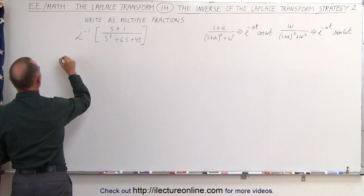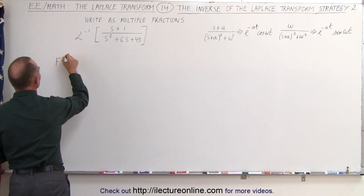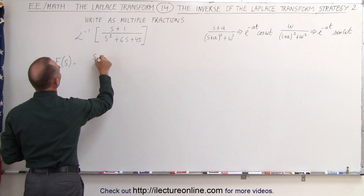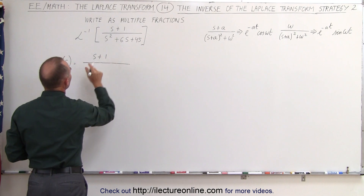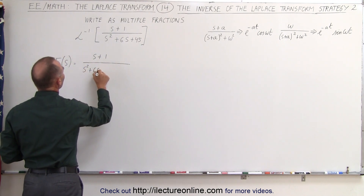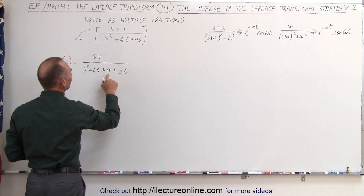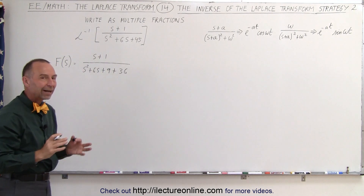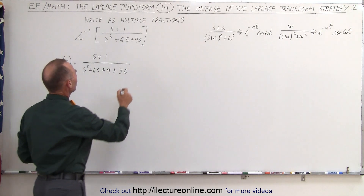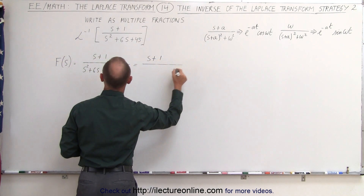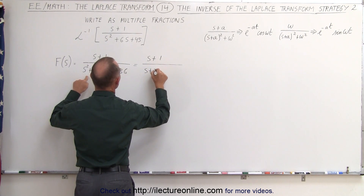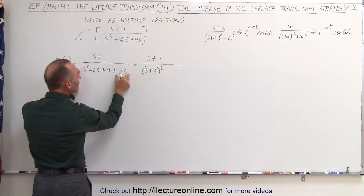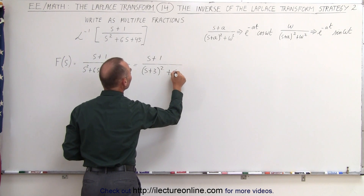So we can say that the inverse Laplace transform — let me start with the notation where we have the function in the S domain, or the frequency domain, is equal to S plus 1 divided by, and the denominator we're going to write as S squared plus 6S plus 9 plus 36. Notice that 9 plus 36 gives us 45 again, but then we can take the first three terms and write them as the square of a binomial. So this can now be written as S plus 1 divided by S plus 3 quantity squared — that's this trinomial converted to the binomial squared — and plus 36 can be written as plus 6 squared.